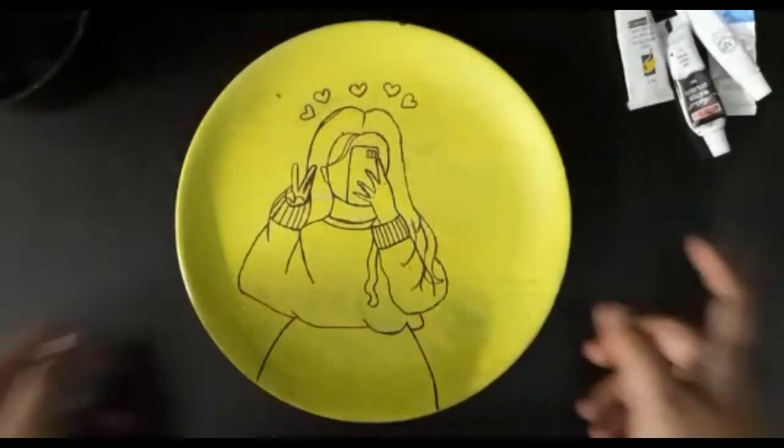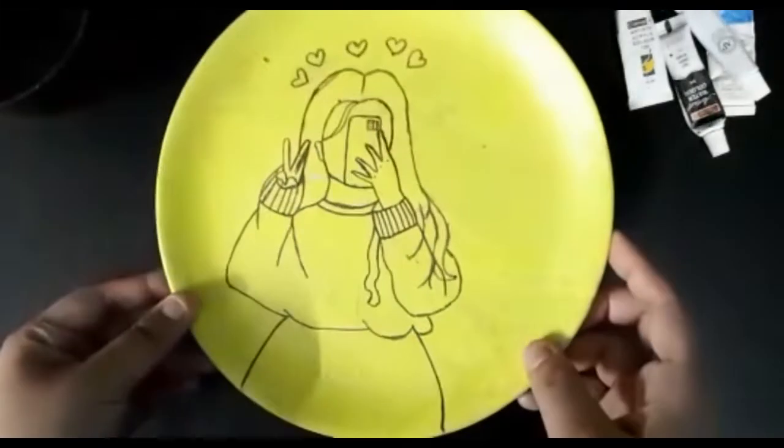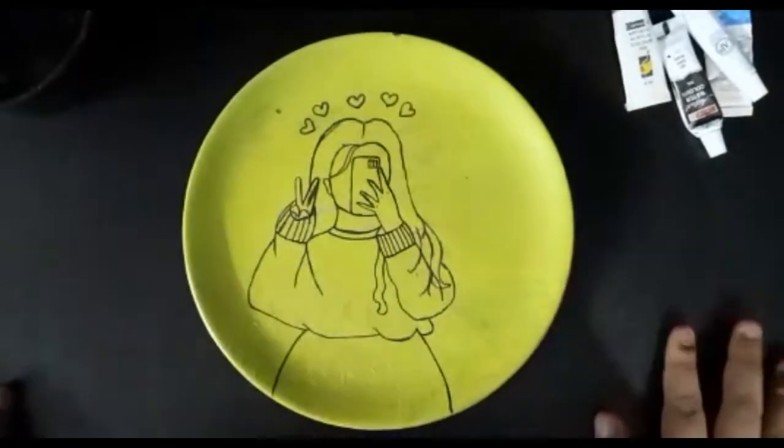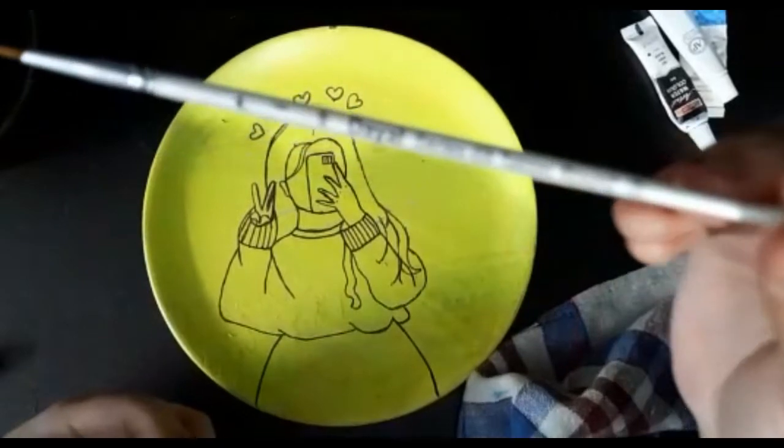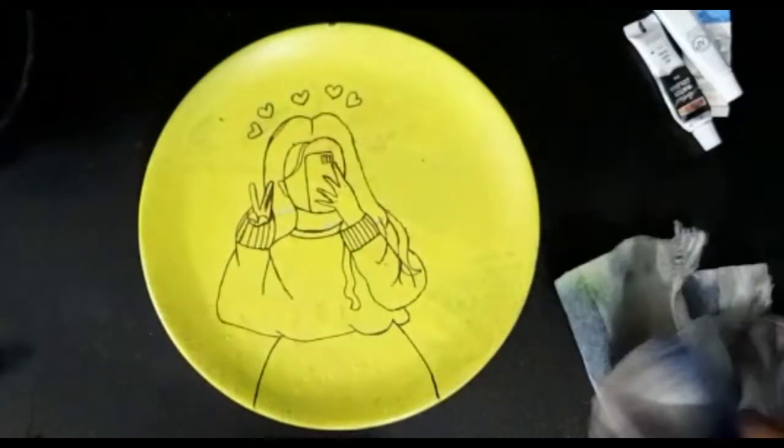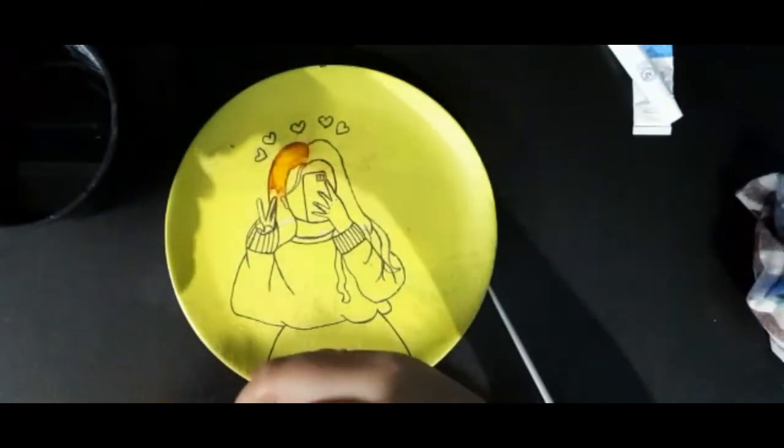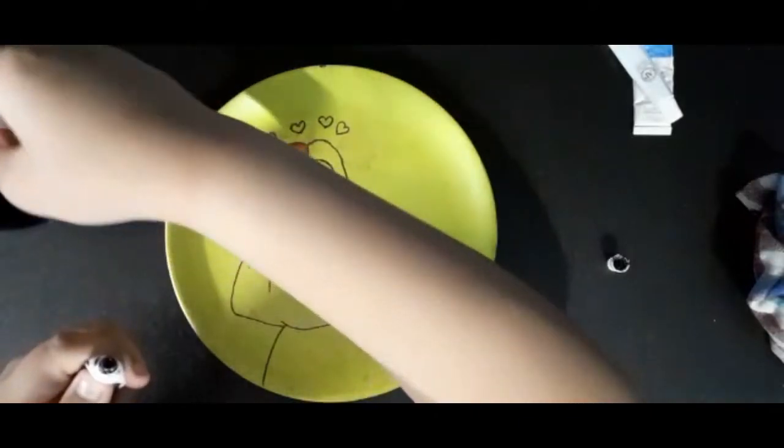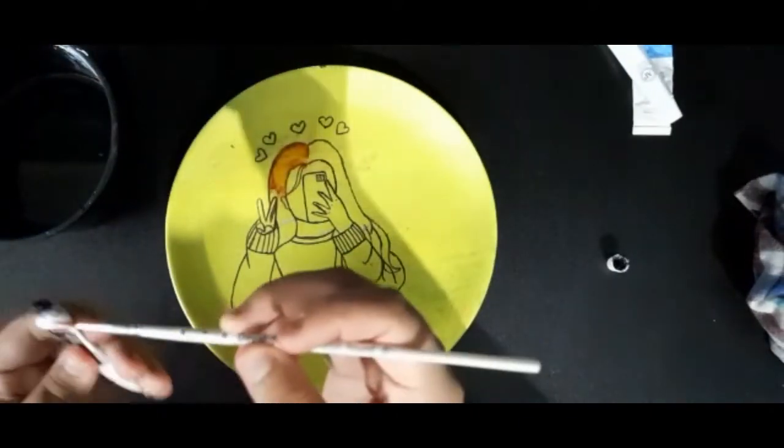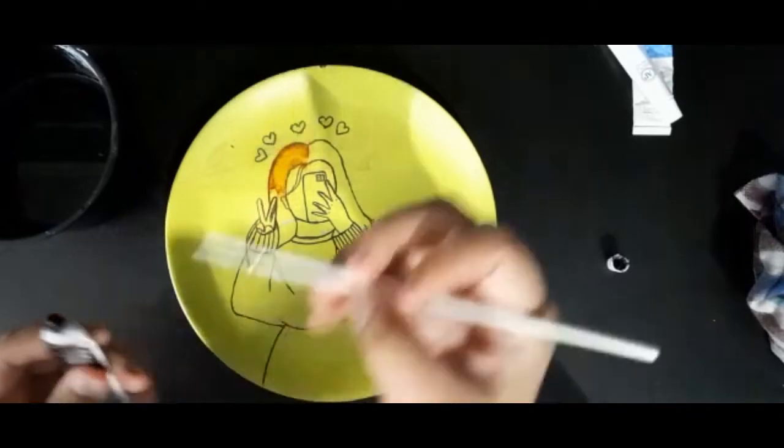The plate is completely covered with lemon yellow and I've drawn a girl from Pinterest with black sketch pen. Now I'm using a zero brush with black artist watercolor for the hair. Actually, I tried brown color but it didn't match, so I changed my mind and used black.